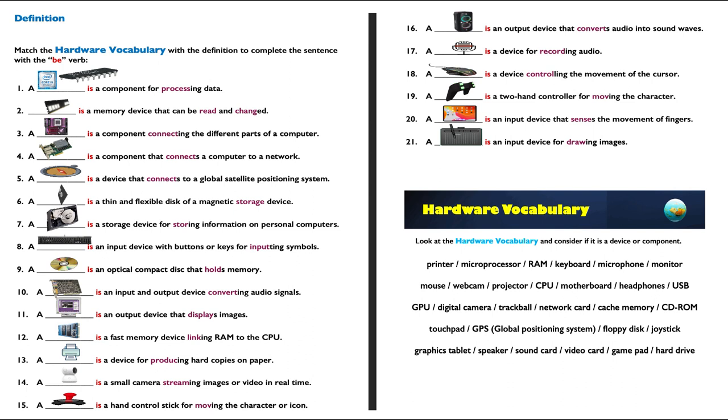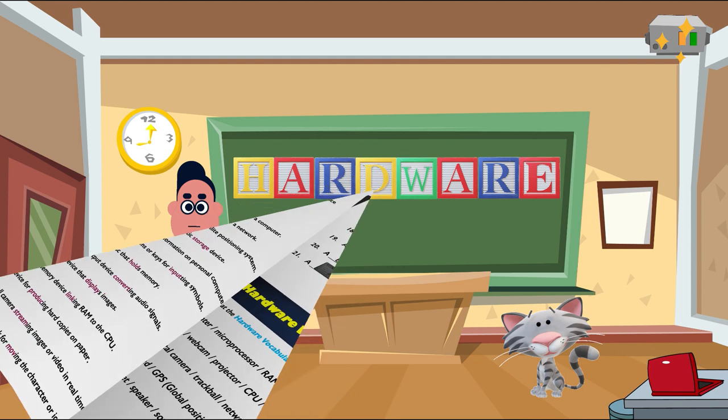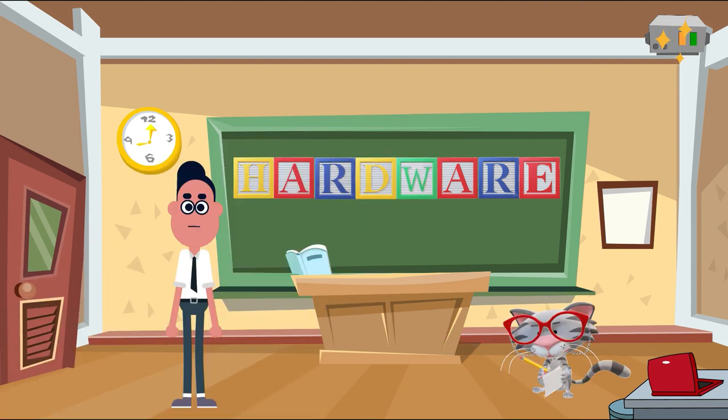For example, a microprocessor or the CPU is a component for processing data. You've got the part of the sentence marked in a sort of purple red lipstick color, like process, read, change, connect, storage, store, input, hold, and so on. These can be used to write descriptive sentences to describe the function or role played by that device or component in the computer.